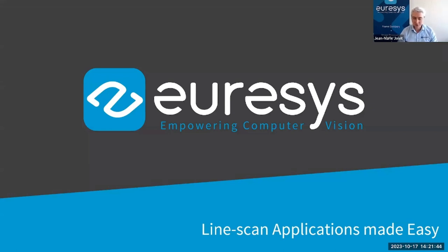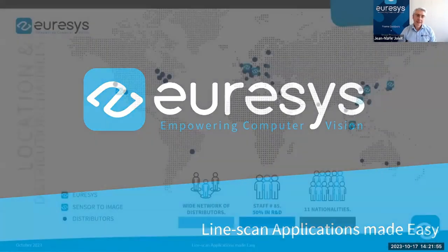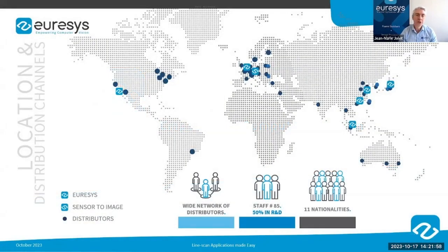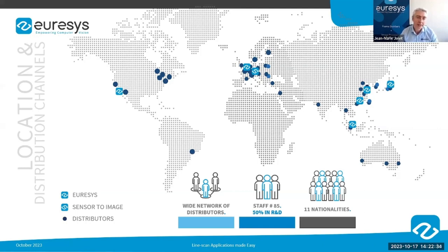Euresys is a manufacturer of machine vision components. Our headquarters is in Liège, located in the eastern part of Belgium. We have R&D teams in Belgium and Germany. Euresys also has sales and support offices in Europe, USA, Singapore, China, and Japan. Currently our staff accounts 85 employees, with 50 percent working in R&D. Euresys also benefits from an extensive network of distributors and is renowned for providing high quality products and premium support to OEMs and system integrators.